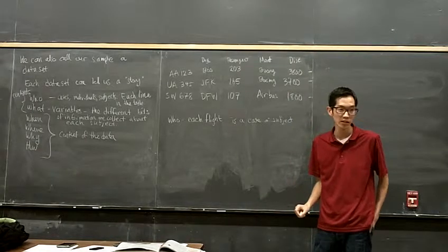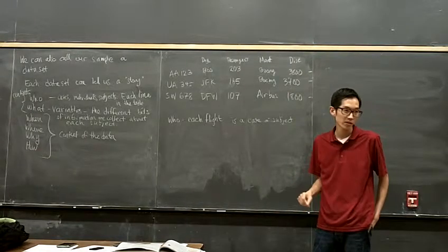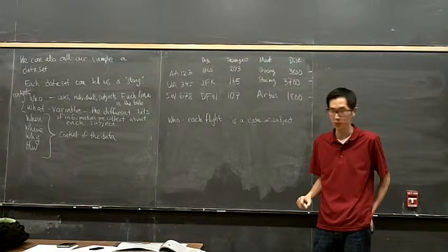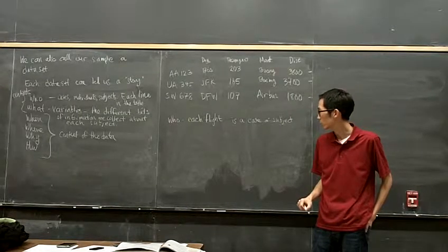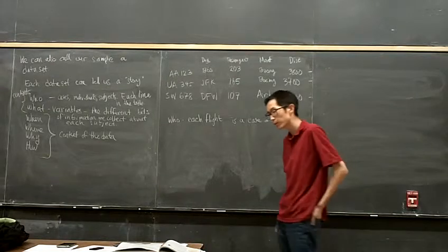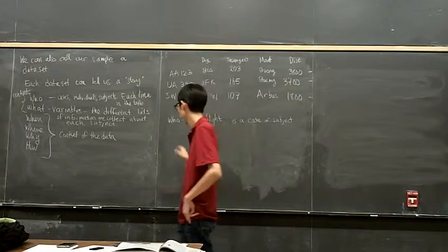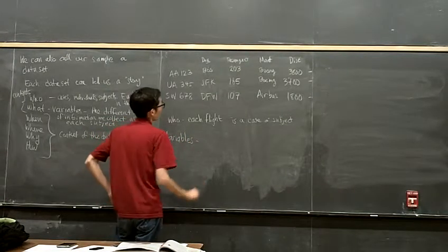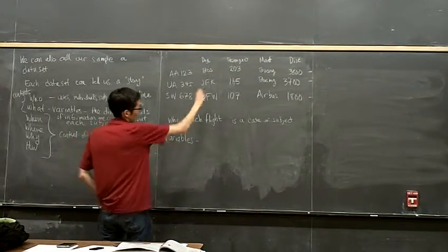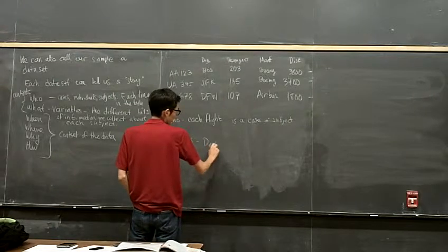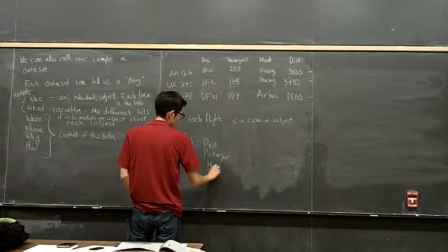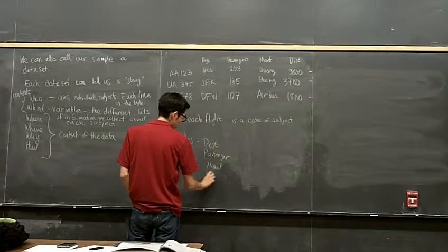That's my who. It's not the airline, it's not the manufacturers or the pilots. Those aren't whos — each line is the who. Now, what kind of variables have I collected? My 'what'? I got destination, passengers, manufacturer, and distance. These are my variables.